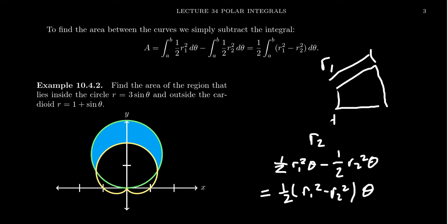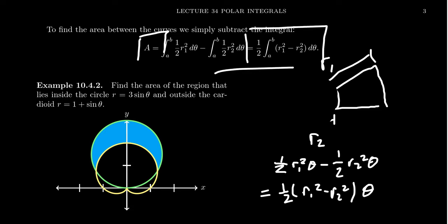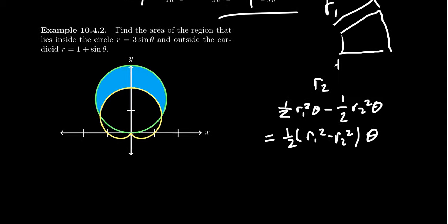When you apply limits and Riemann sums to that idea, you get the formula for the area between two polar curves: one-half times the integral from a to b of the difference of squares of the radii, d theta. Let's apply that to the context of our circle and our cardioid.